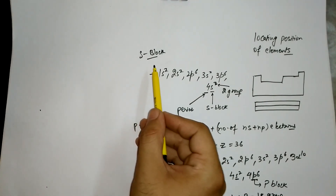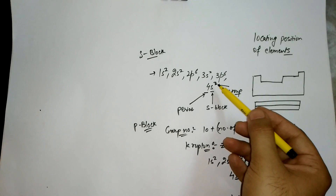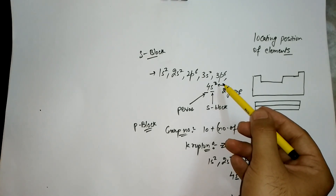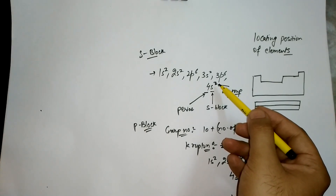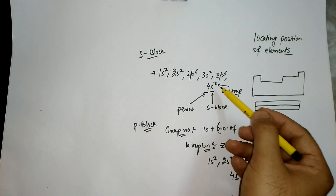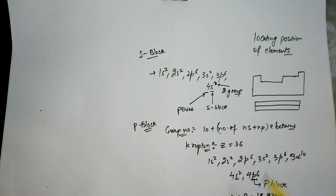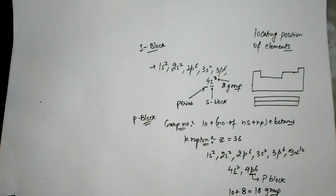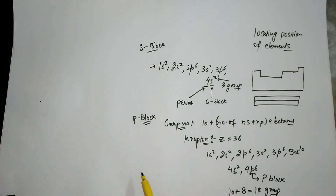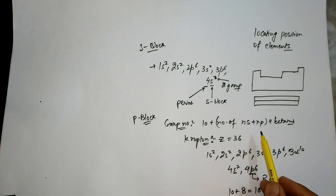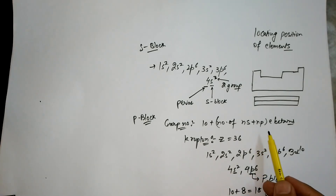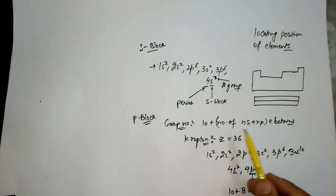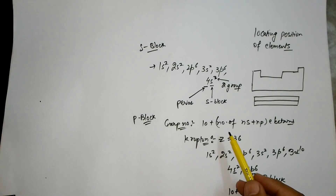To summarize: for s-block elements, look at the valence electrons in the s subshell — if there is a single electron it belongs to group 1, otherwise it belongs to group 2. For p-block elements, add the total number of ns and np electrons and add 10 to get the group number.